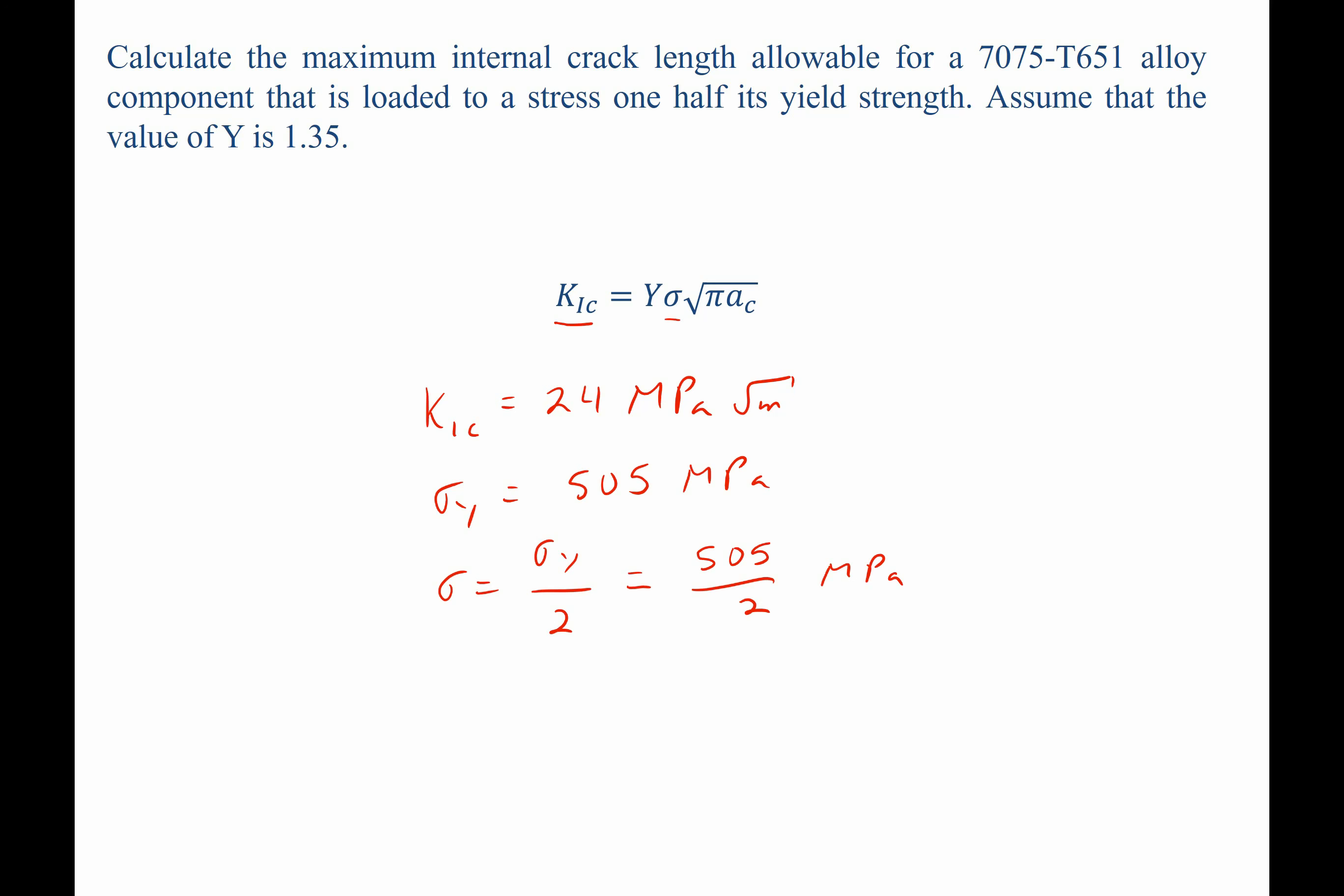Let's go ahead and rearrange our Griffith's fracture toughness equation to solve for the half-crack length, ac. Having done so, we can now substitute in values. Plugging these values in, we find that the half-crack length is equal to 0.00158.